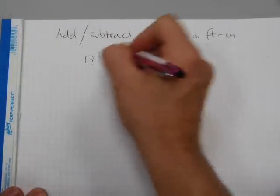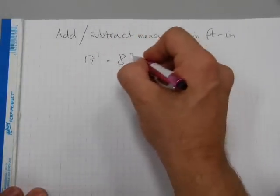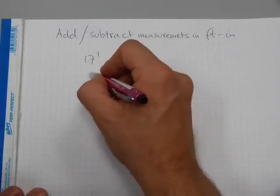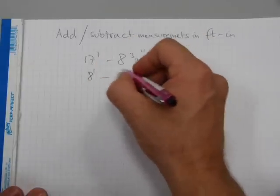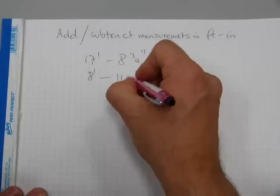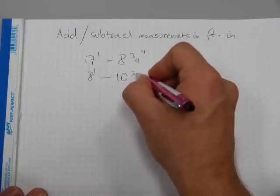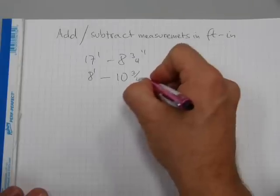How about 17 feet, 8 inches and 3 quarters must be added to 8 feet, 10 inches and 3 quarters.